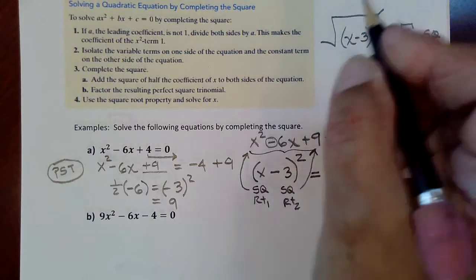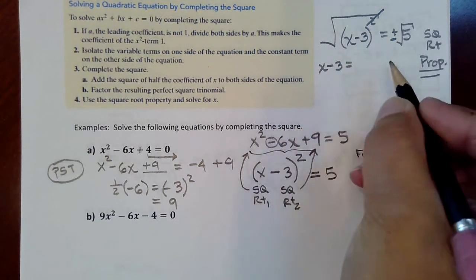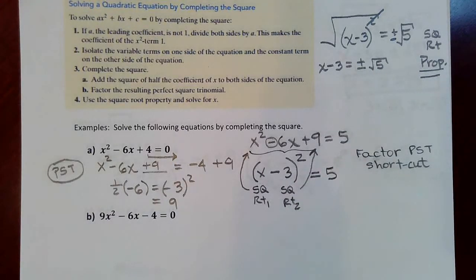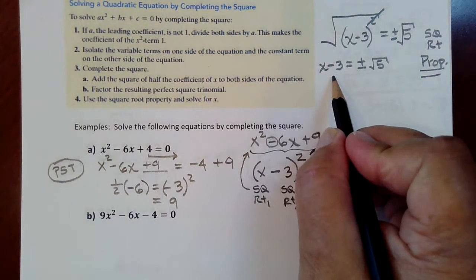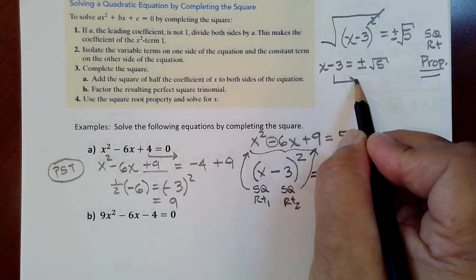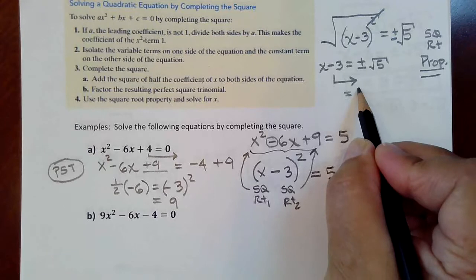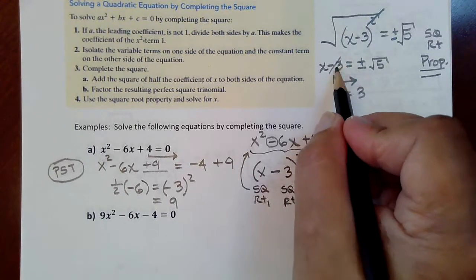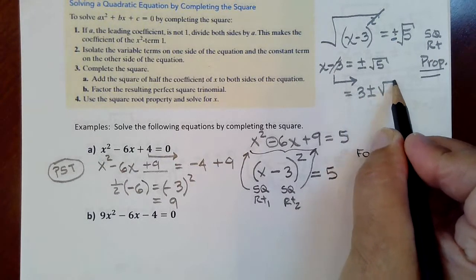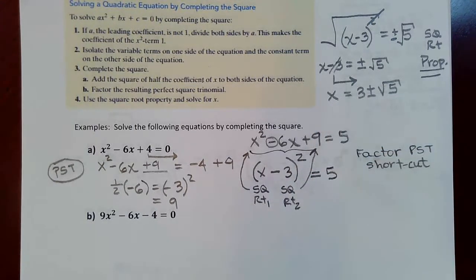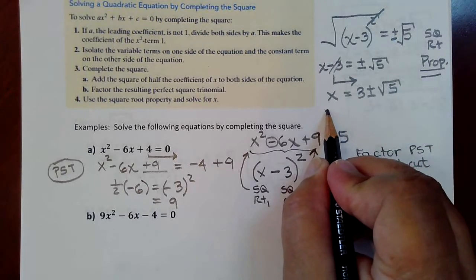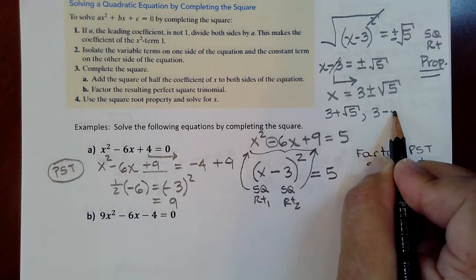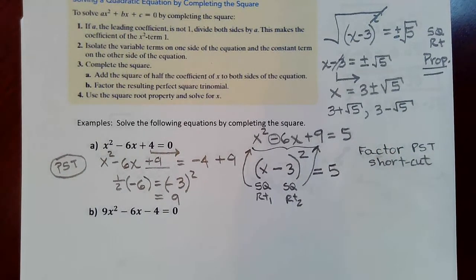On the left side, the square root removes the square, and out pops x minus 3. On the right side, you have plus or minus the square root of 5. There's just one more step — getting the x by itself. Adding 3 to both sides, the negative 3 moves to the other side as a positive 3, joined by plus or minus square root of 5. Those are your two solutions. You can give them in compact form, or separate them as 3 plus the square root of 5 and 3 minus the square root of 5.